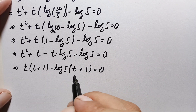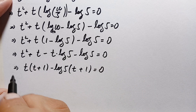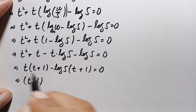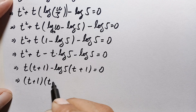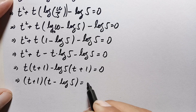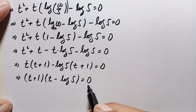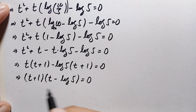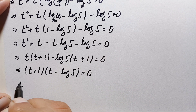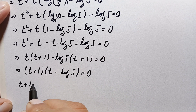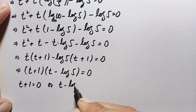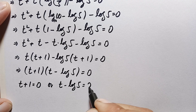Now (t + 1) is common in both terms. Taking out (t + 1) common, this becomes (t + 1)(t − log 5) = 0. Since the product of these two expressions is zero, either (t + 1) = 0 or (t − log 5) = 0.